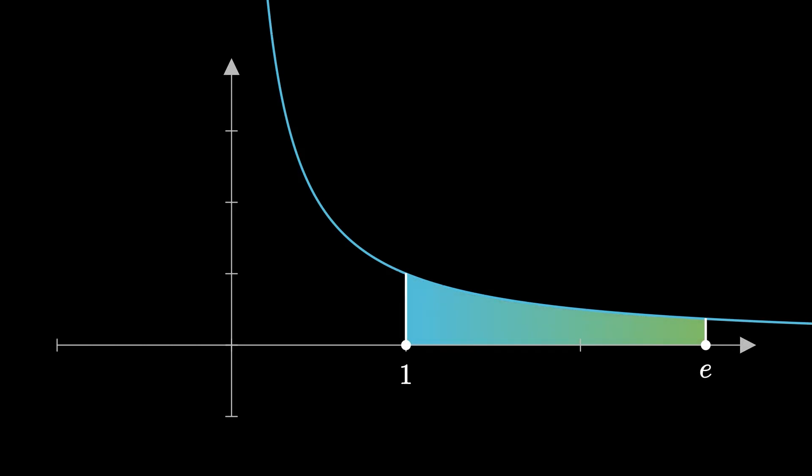For example, one can define e as the constant such that the area between the hyperbola 1 over x, the x-axis, x equals 1, and x equals e, is equal to exactly 1. In this sense, e comes from the hyperbola, but as it is often in math, connections can go both ways.